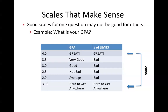You also want to make sure the scales you use for one question make sense if trying to use them for another. A good scale for one question may not be good for others. For example, a scale for GPA — 4.0 is great, 3.5 is very good, 3.0 is good, 2.5 is not bad, 2.0 is average, less than 1.0 is hard to get anywhere — doesn't work for number of limbs. At the extremes they match, but anything in between does not. So a good scale for one question definitely does not match a good scale for another.